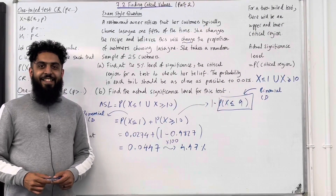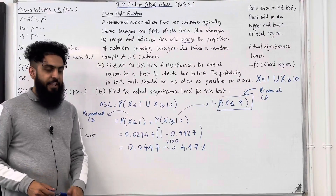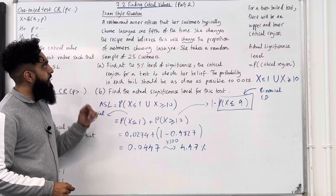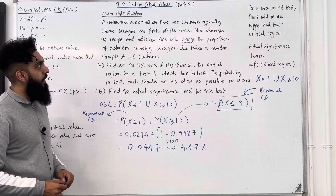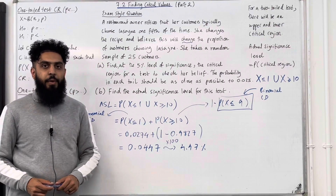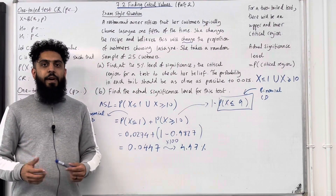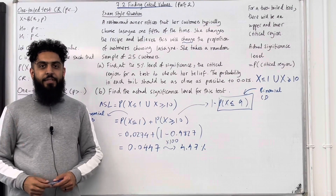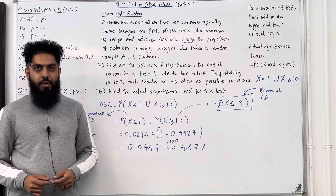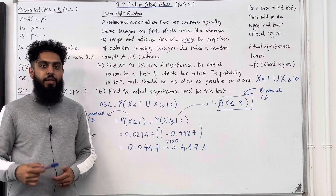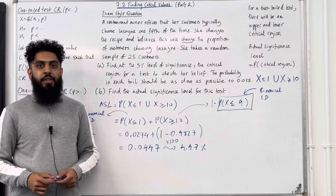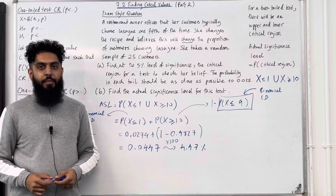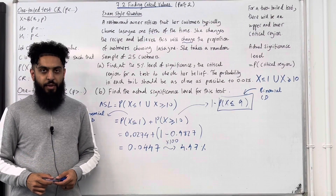That completes Part B of the exam question and teaching video 7.2 Finding Critical Values Part 2. If you found this useful, please subscribe, leave a like and comment, and turn on your notification bell to receive updates when I post new videos.